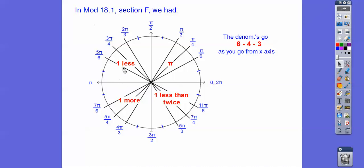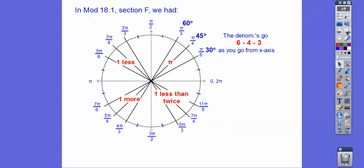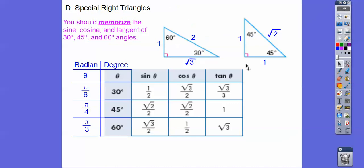They all have pi's in the numerator, but this is 1 less than the denominator. So if that's 6, this is 5 pi. If that's 4, that's 3 pi. 3 gives us 2 pi. This is 1 more. These are all 1 more than their denominator. This is 1 less than twice: double is 6, one less is 5; double is 8, one less is 7; double is 12, one less is 11. So these radian measures serve as our reference angles.